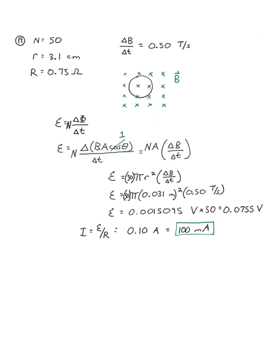A 50 turn circular coil has diameter 6.2 centimeters and resistance 0.75 ohms. A magnetic field perpendicular to the coil is changing at 0.50 teslas per second. The induced current in the coil is what?